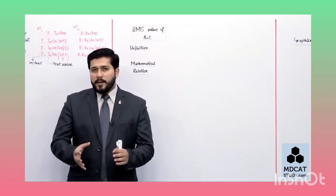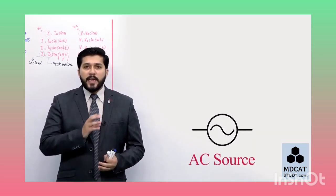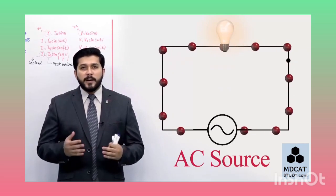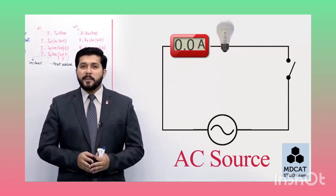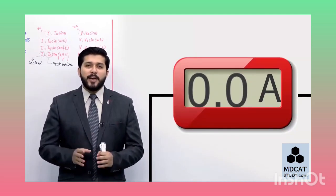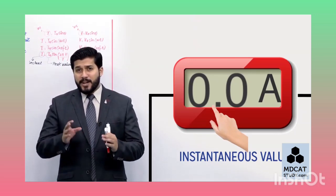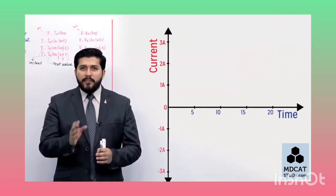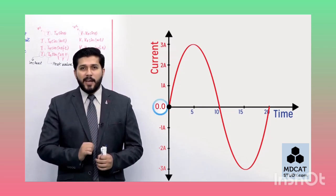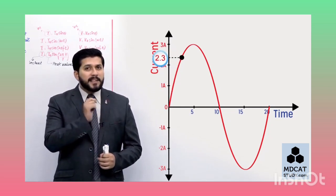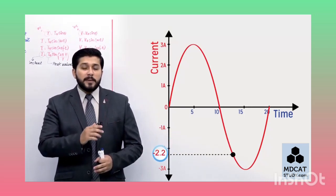RMS value of current کو سمجھنے کے لیے پہلے یہ دیکھیں: اگر میرے پاس ایک AC source کسی load سے attach ہے اور میں current measure کرنا چاہتا ہوں تو ایک meter لگاتا ہوں۔ ذرا suppose کریں کہ یہ meter instantaneous value بتا سکتا ہے۔ اگر یہ meter instantaneous value بتائے تو آپ جانتے ہیں کہ AC کی waveform میں magnitude constant نہیں ہے - current zero سے مسلسل بڑھ کر maximum پر آتا ہے پھر کم ہوتا ہے۔